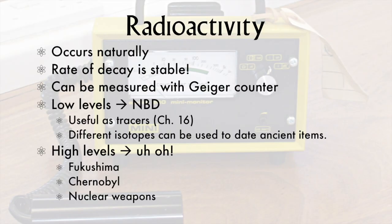We can measure radioactive decay with a Geiger counter — named after its inventor, Geiger. At everyday background levels, radioactivity is useful to biologists because we can use its detectability to trace different chemical reactions. We can also use the consistency of the rate of decay to measure the age of fossils and other ancient items. At elevated levels, however, radiation is bad news — the power plants at Fukushima in Japan and Chernobyl in Ukraine provide evidence for this, and nuclear weapons produce radioactive fallout that persists for years and remains injurious for decades to come.